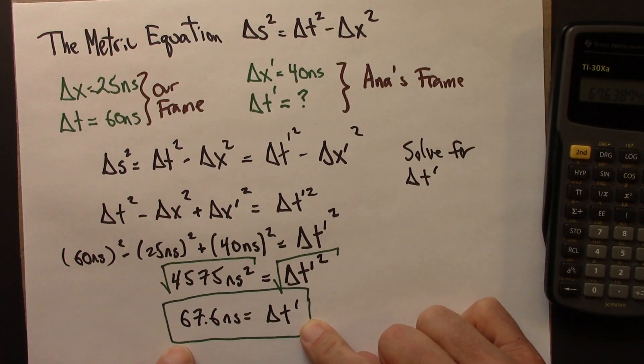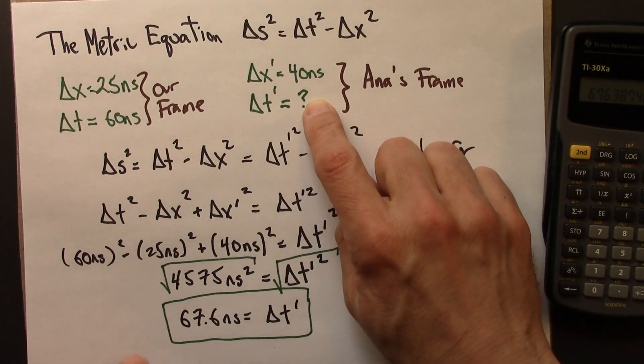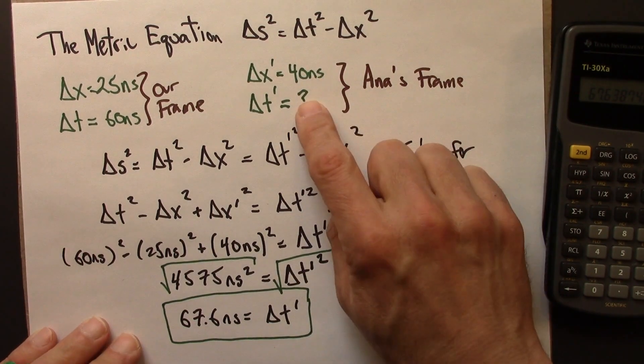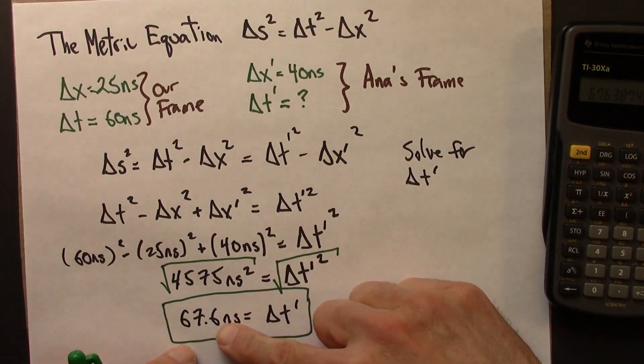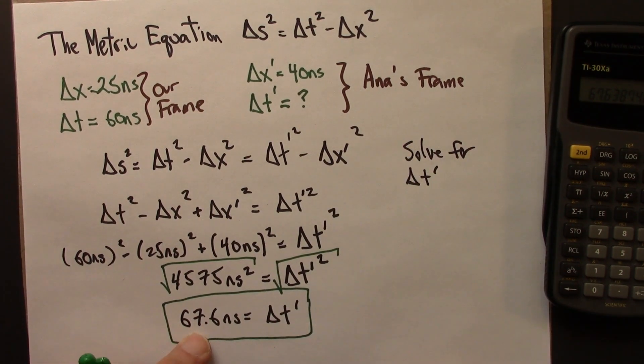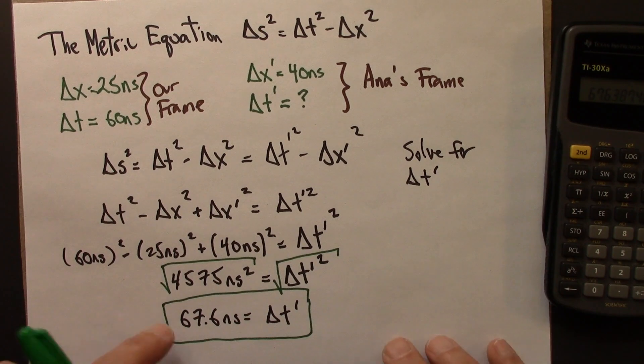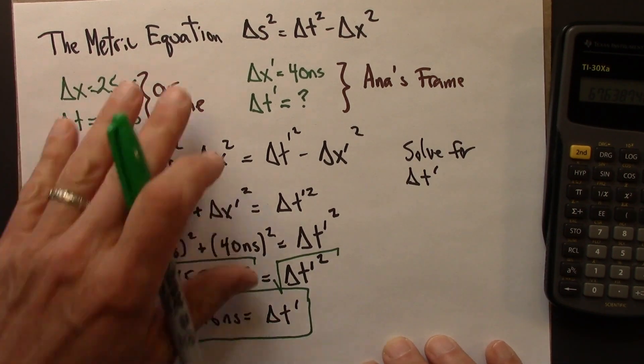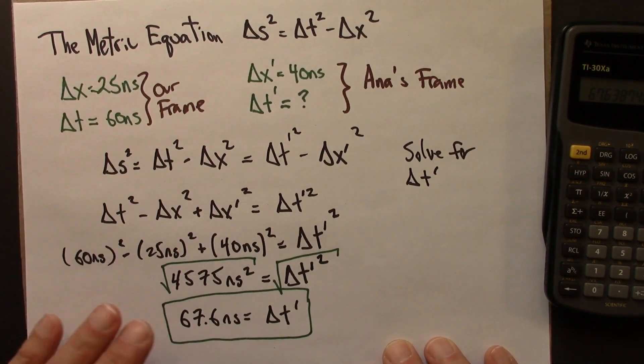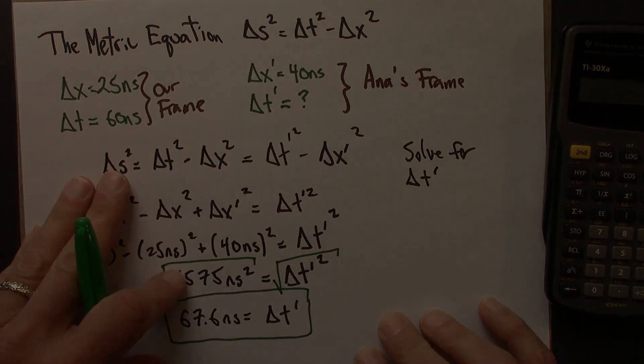In Anastasia's frame, she would see the two firecracker explosions as occurring 67, almost 68 nanoseconds apart. So this is an illustration of how you can use the metric equation, one of the many ways. Following this video, there's a quiz for you to practice this idea, and then we're going to use the metric equation to help analyze a real physical situation.